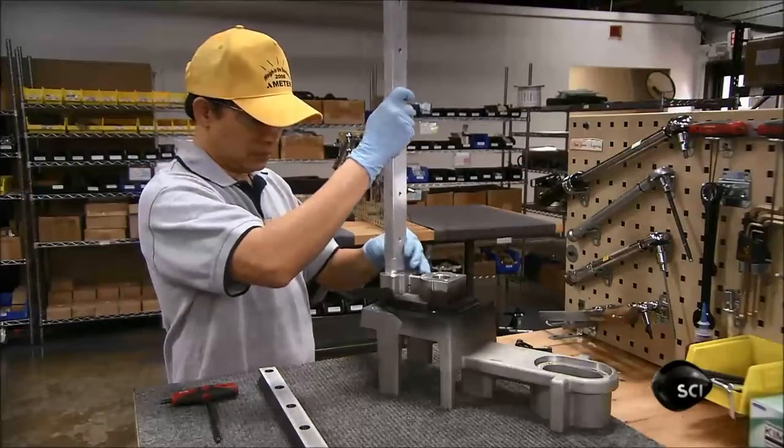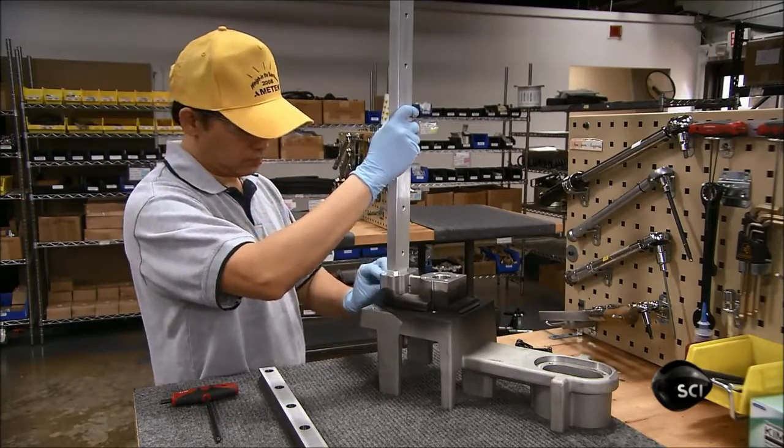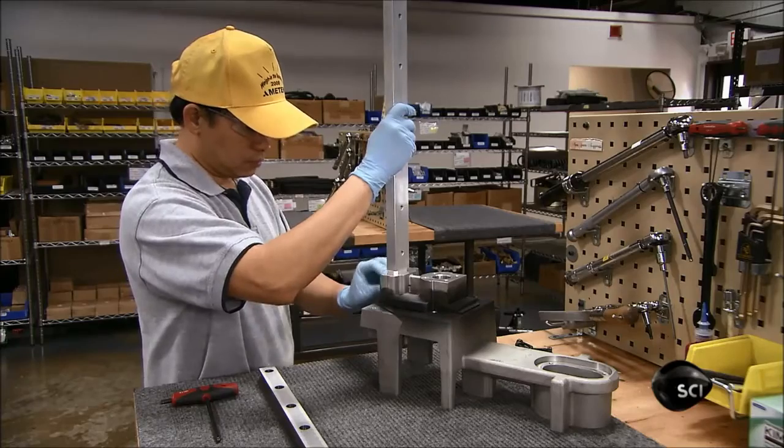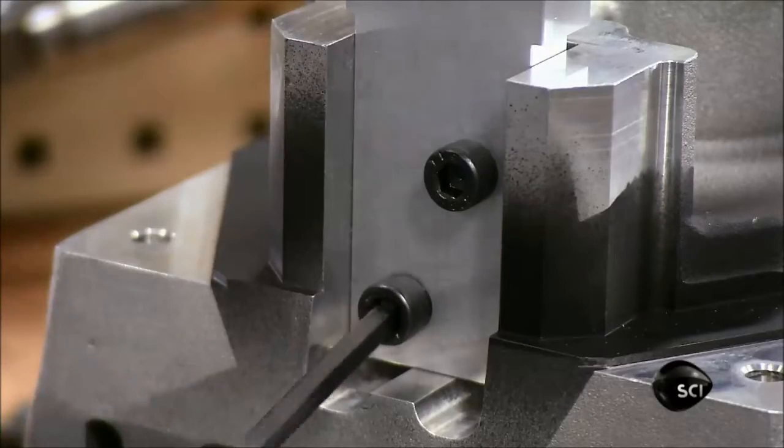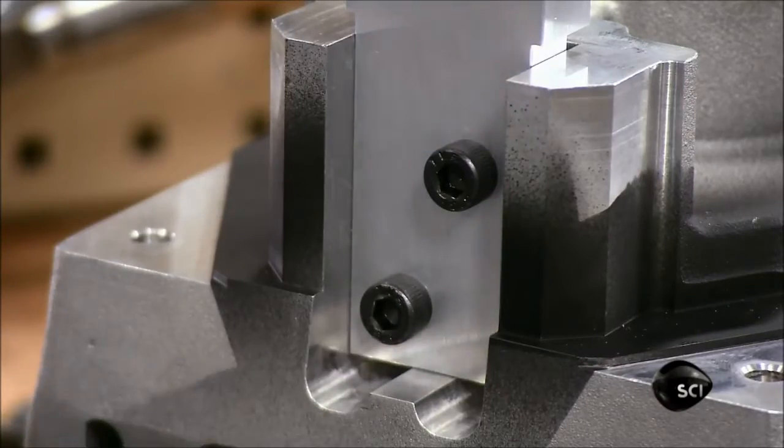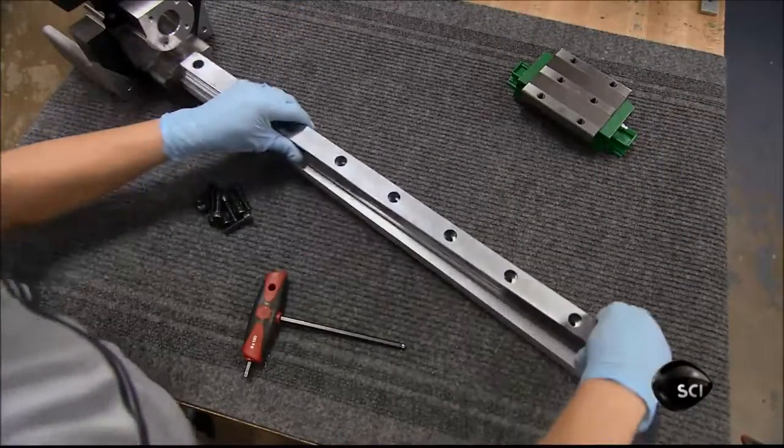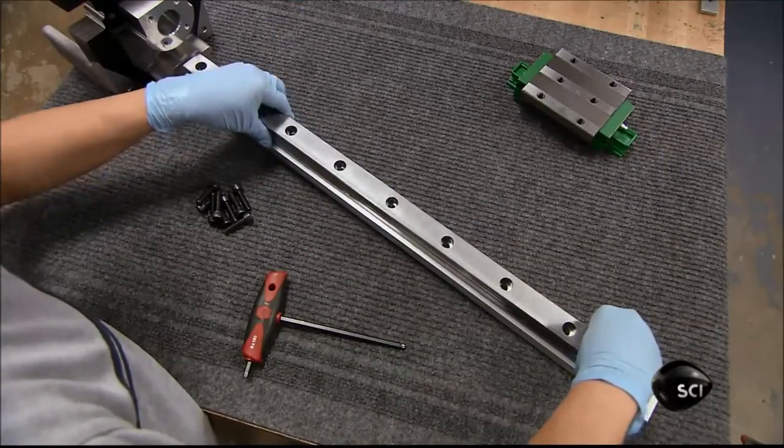Another member of the team now assembles a vertical support rail to an aluminum base. This rail is essentially the backbone of the tester. It will support the force arm and the track it moves on. He screws the track to the support rail.